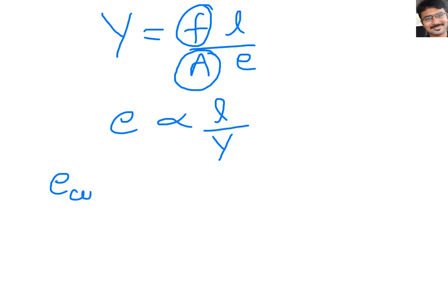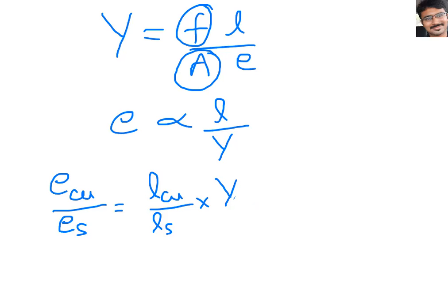Elongation is directly proportional to L/Y. So the ratio of elongation of copper to elongation of steel equals (L_copper / L_steel) × (Y_steel / Y_copper), because Y has an inverse relation with elongation. So: E_copper / E_steel = (L_copper / L_steel) × (Y_steel / Y_copper).